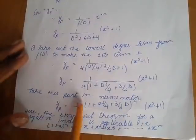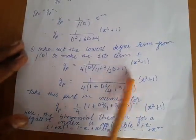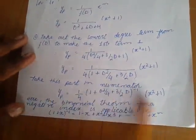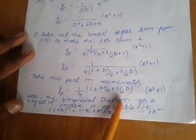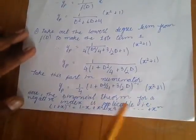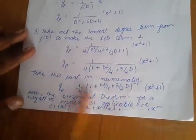Now, take this part in numerator. So, our equation becomes this. We can apply here binomial theorem for negative index in this equation.